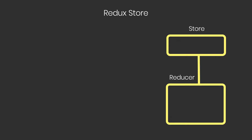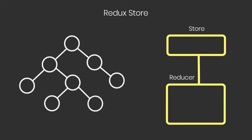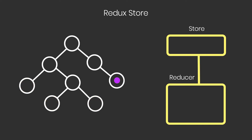To solve prop drilling, we have Context API. The Context API allows you to have a central store where your data lives, just like Redux. We are going to learn what Redux is in future lectures, but the concept of React Context API and Redux is the same — both allow you to have a central store where your data lives, and the store can be inserted into any component directly.